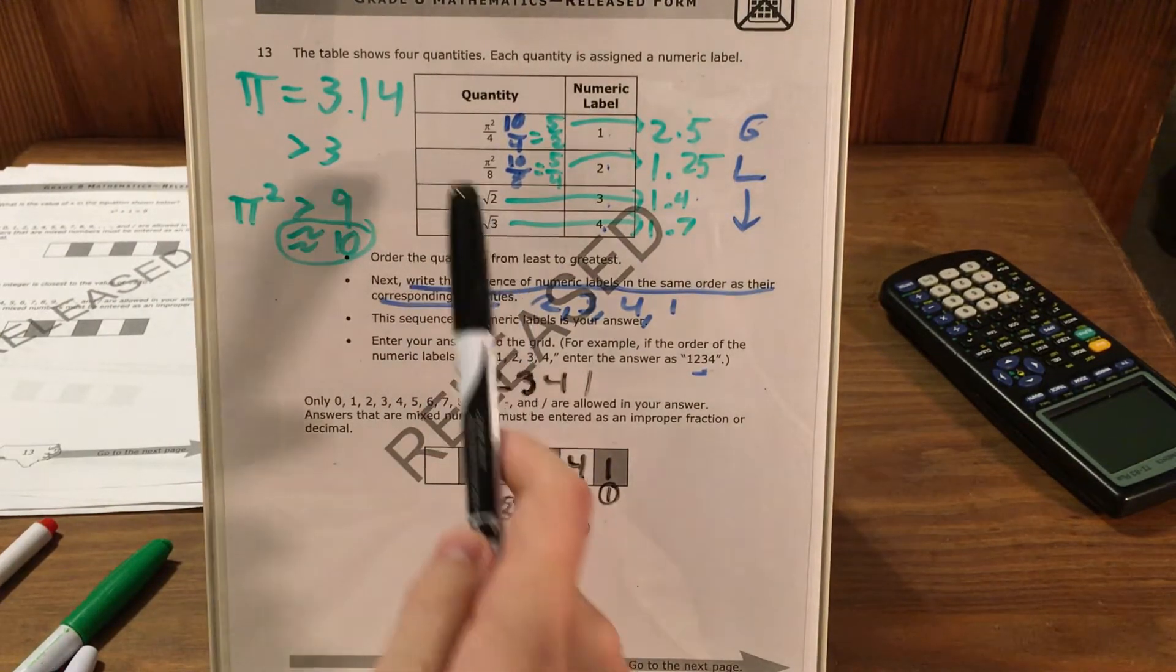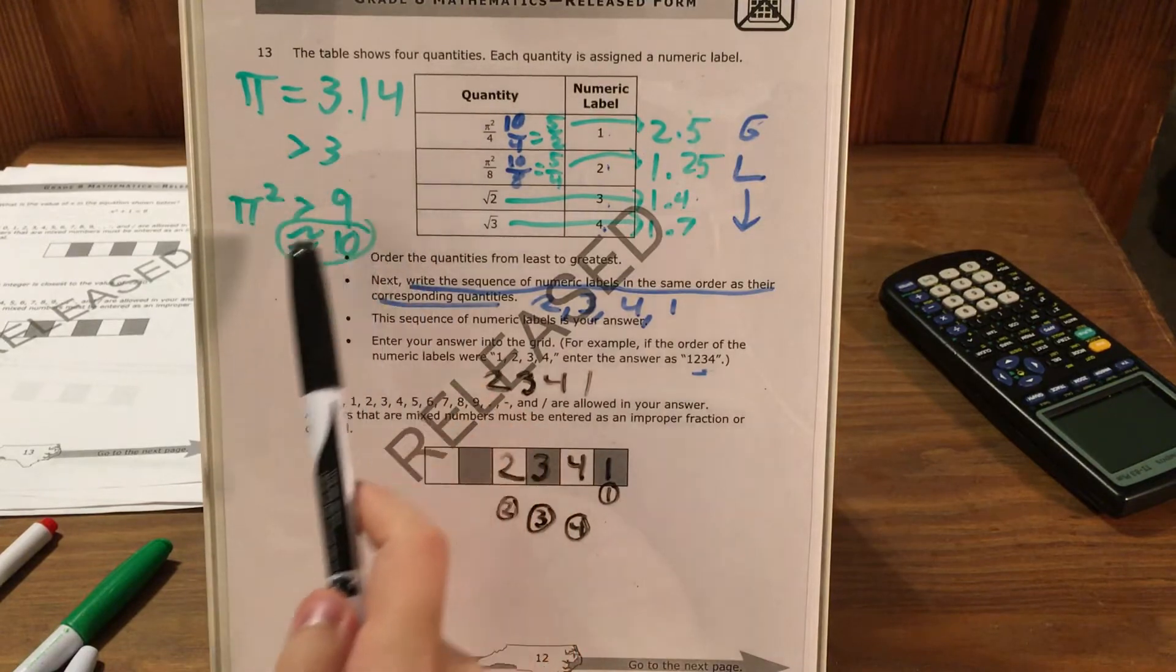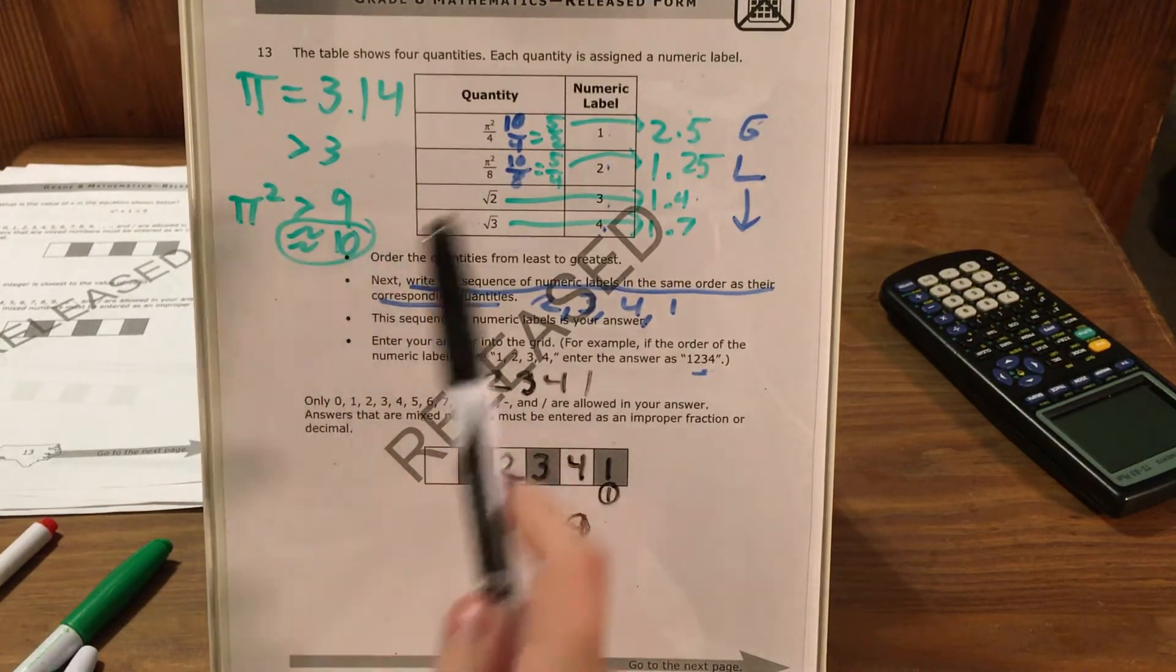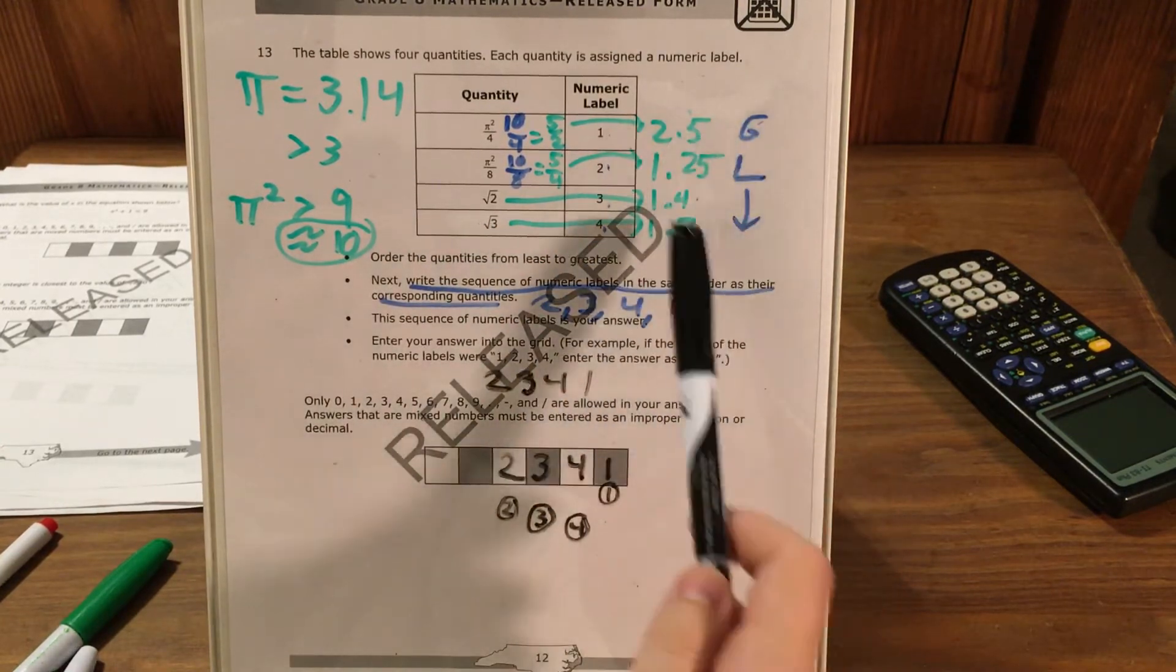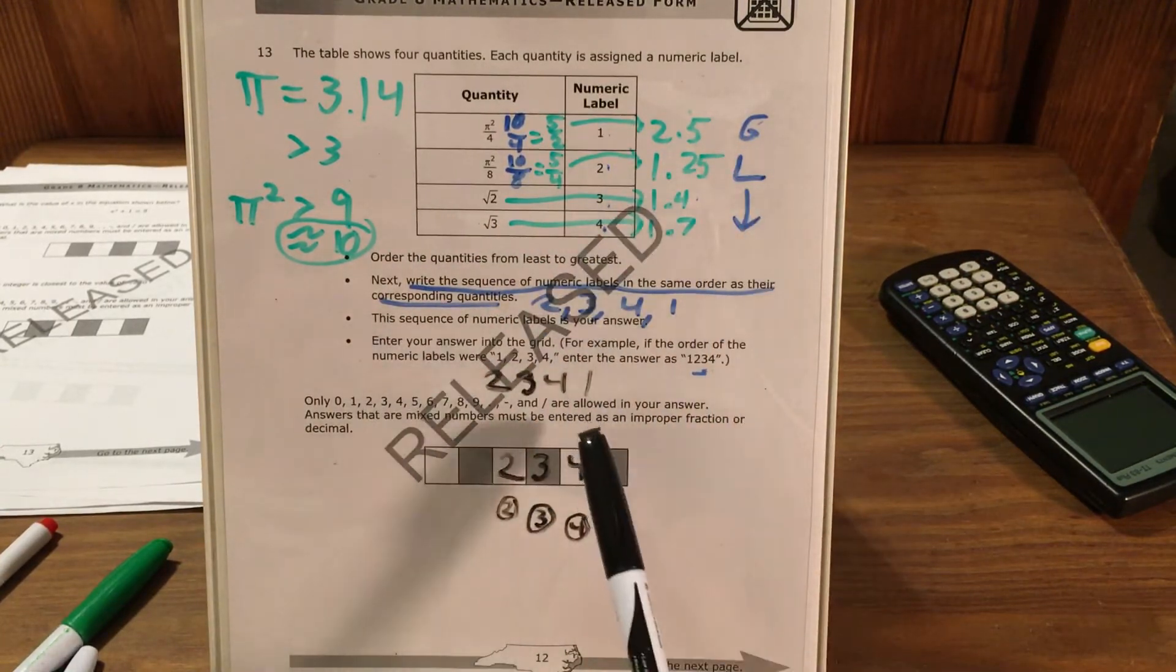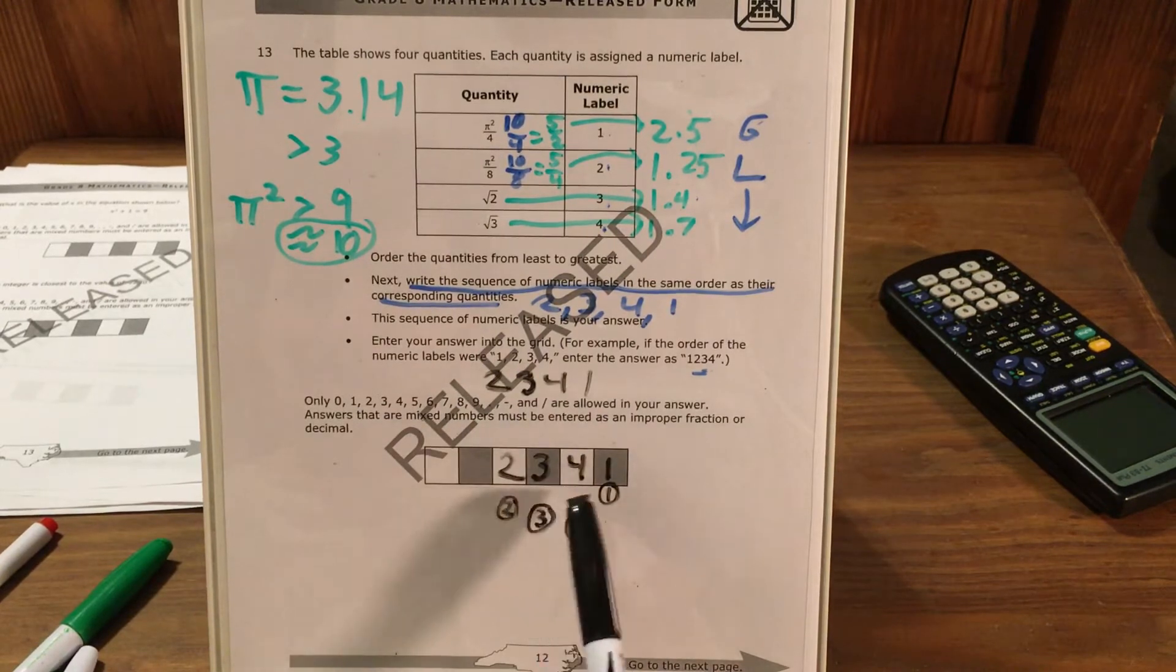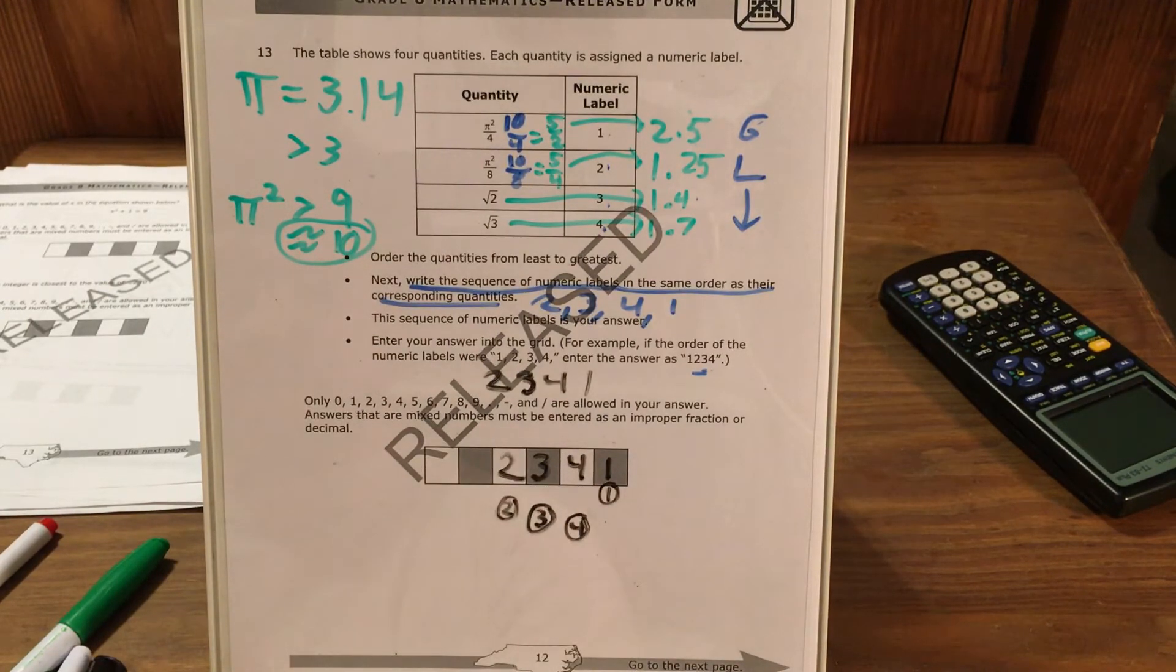So we had to actually estimate, do a whole bunch of estimating and saying pi squared is about 10, square root of 2 is about 1 and 4 tenths, square root of 3 is about 1 and 7 tenths. To get these in order from least to greatest, write down the order as just the numbers and put it into the gridded response section. This question is horrendous and unnecessary, but we worked through it.